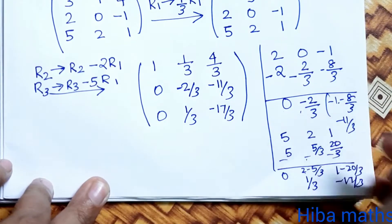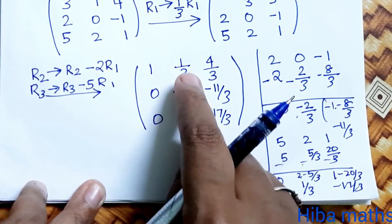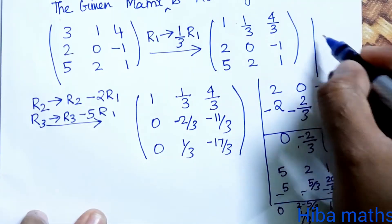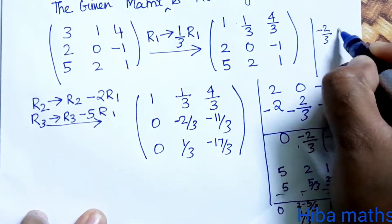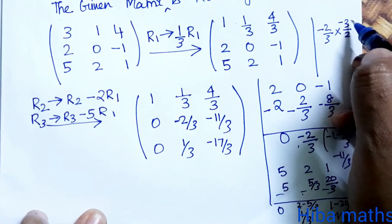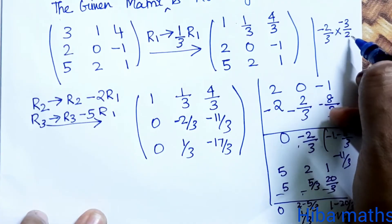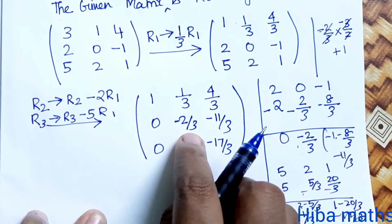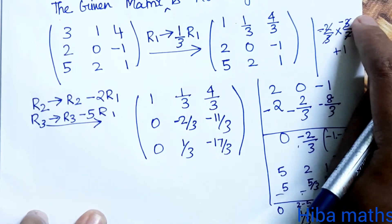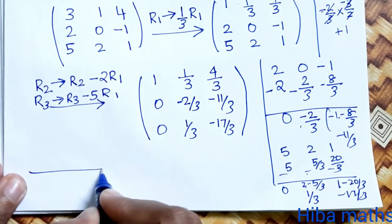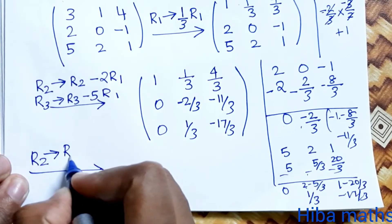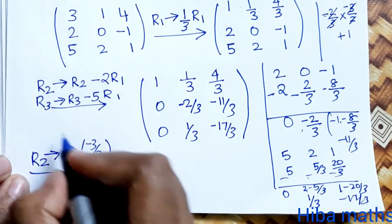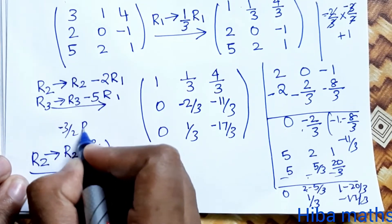Now we need a 1 in the second pivot position. R2 is multiplied by minus 3/2. So R2 changes to minus 3/2 times R2. This turns the -2/3 entry into 1, and the matrix continues to be simplified.